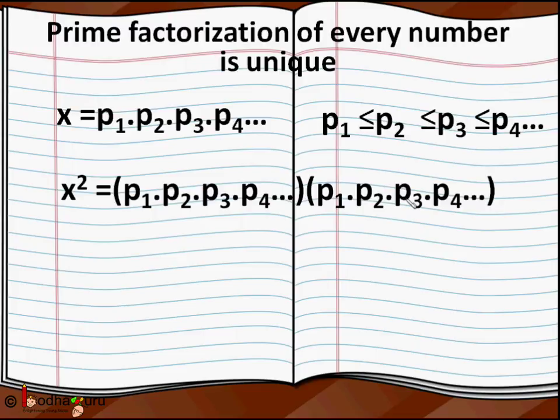So if a prime number, say p, is a factor of x², then it would be a factor of x too.